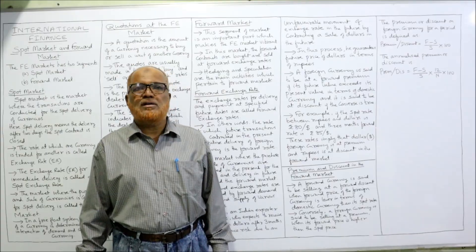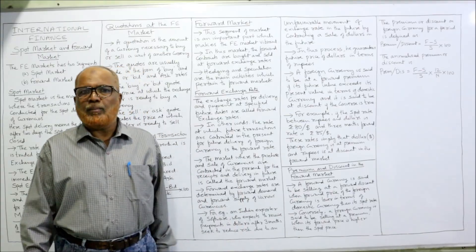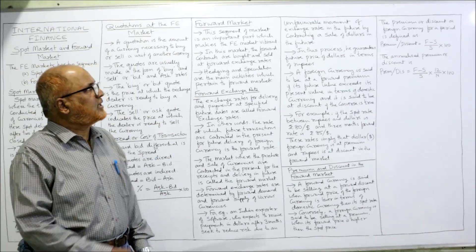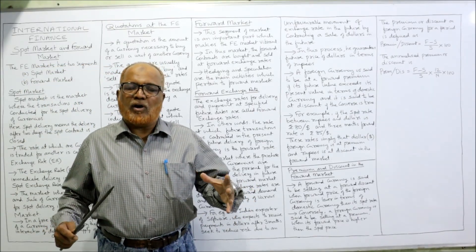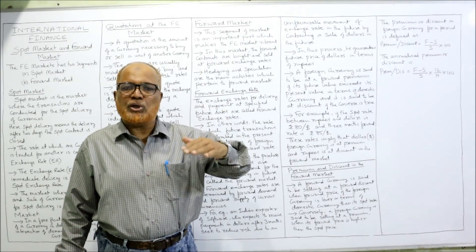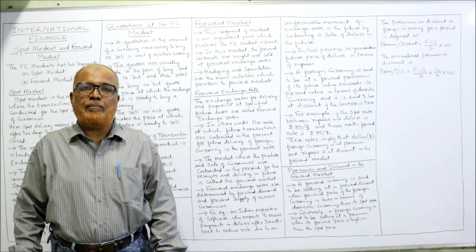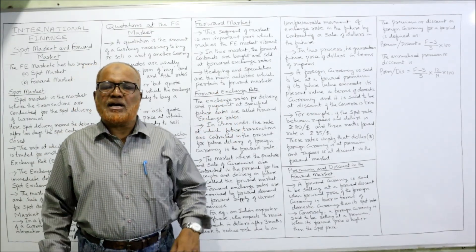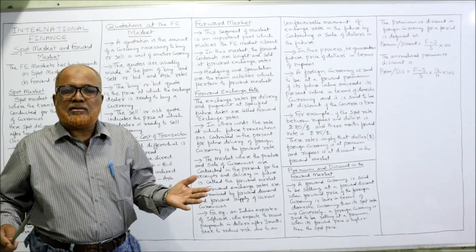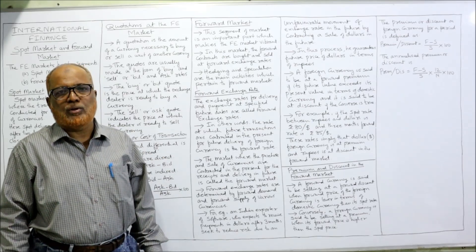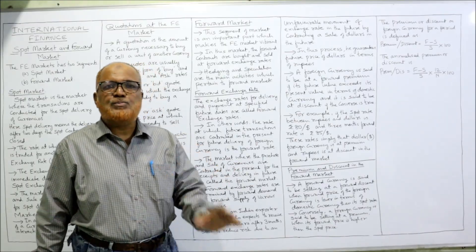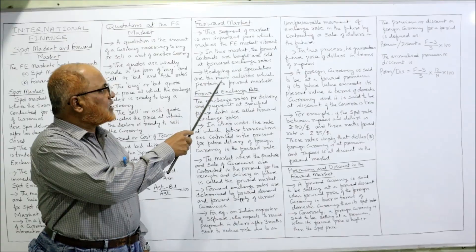The second and very important segment of the market is the forward market. This segment is a very important part that makes the foreign exchange market vibrant — rates fluctuate every second and every minute. In the forward market, forward contracts are bought and sold. A forward contract means the buyer and seller want to buy or sell in the future, not at the present spot.